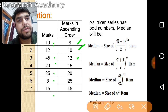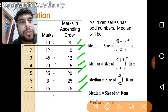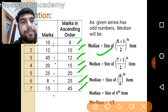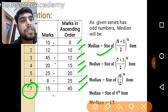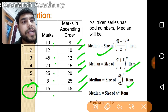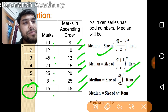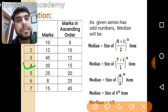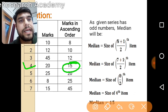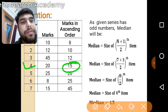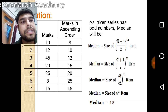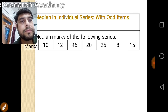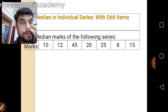When we arrange these marks in ascending order, they become: 8, 10, 12, 15, 20, 25, and 45. Applying the formula — Median = size of (N+1)/2 th item — with N = 7, we get (7+1)/2 = 4th item. The 4th item in ascending order is 15, so our answer is 15.